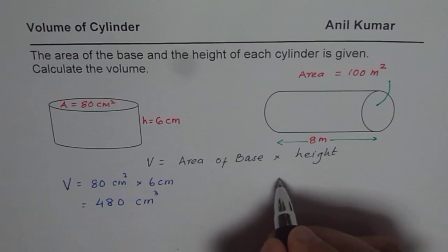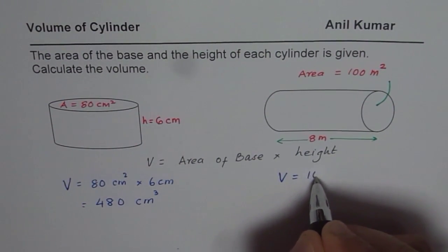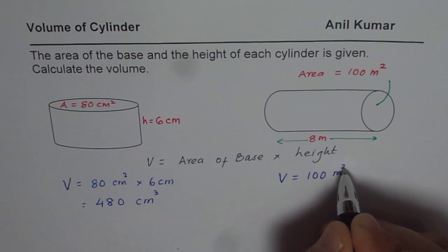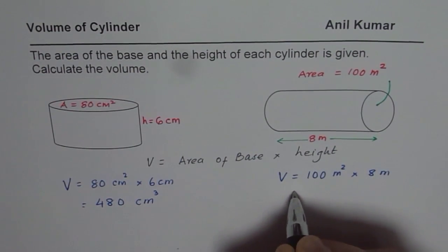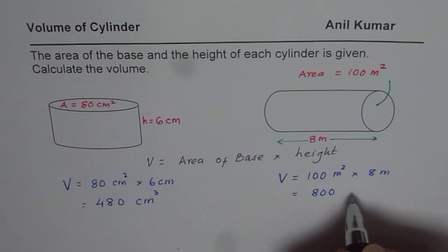In the second case, the volume is 100 meter square times 8 meters, that is 800 meters cube.